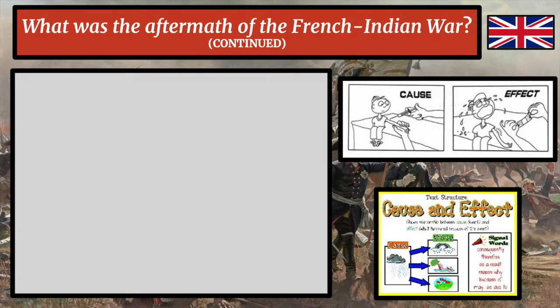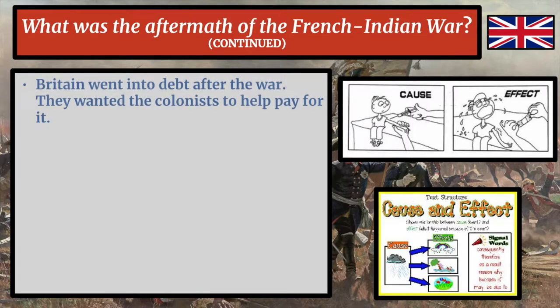There are a lot of cause-and-effect relationships here. Before the war, the British more or less let the colonies run themselves. They didn't really interfere very much — as long as the colonies sent back raw materials to Britain so they could make finished goods, the British were pretty happy. But after the French and Indian War, that changed in a big way. Britain went into a lot of debt after the war. War costs money — you have to spend a lot on military equipment, pay soldiers, and do everything needed to win. When the war was over, they wanted the colonists to help pay for it.